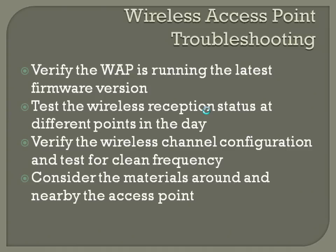If it is on the latest firmware, test the wireless reception status at different points in the day. Wireless reception can be affected by anything in the 2.4 gigahertz range if you're using B or G. For example, a wireless phone being used at the time, or someone turning on a microwave, or even a nearby airport — they use a lot of things in the 2.4 gigahertz range — can all affect signal.